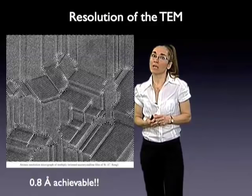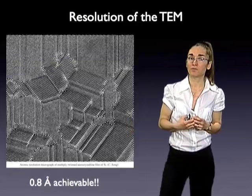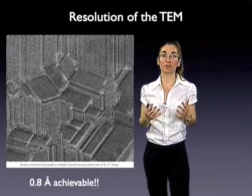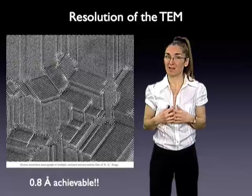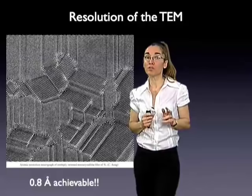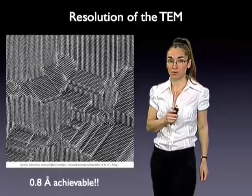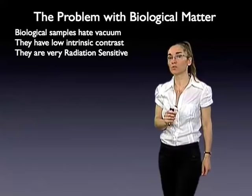Unfortunately, that is not the case for biological material, which is extremely sensitive to radiation. It was only a few years ago that people thought that high-resolution information from biological materials would never be reached, because the sample would vaporize before images were finally collected. Fortunately, there are more than one way in which we can tweak nature and obtain high-resolution information from our biological samples.